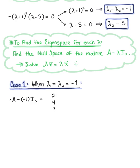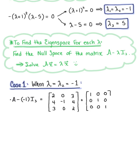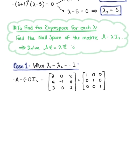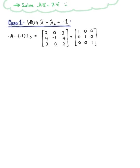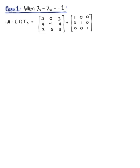We need to find matrix A minus (-1) times the 3 by 3 identity. Matrix A is [[2,4,3],[0,-1,0],[3,4,2]], and we add the 3 by 3 identity matrix. Combining like terms, we get the matrix [[3, 4, 3], [4, 0, 4], [3, 0, 3]]. We can already see that linear dependence relationship among the column vectors.